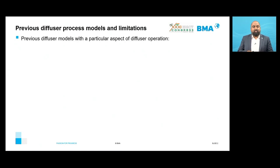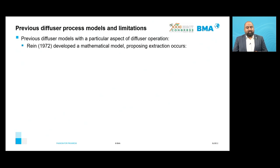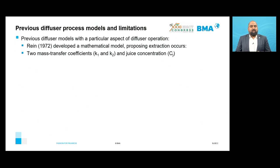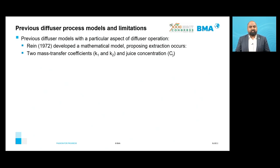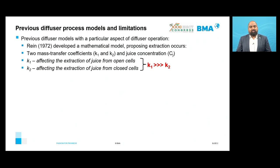Since this paper looks at developing an improved model for the diffuser process, it is worthwhile to examine previous diffuser models and their limitations. Ryan in 1972 developed a mathematical model proposing extraction occurs via two simultaneously occurring processes, with two mass transfer coefficients k1 and k2 to determine the concentration of extracted juice. The mass transfer coefficient k1 affected extraction from open cells via the displacement washing process, and k2 affected extraction from closed cells via molecular diffusion. Ryan proposed that k1 is much larger than k2.